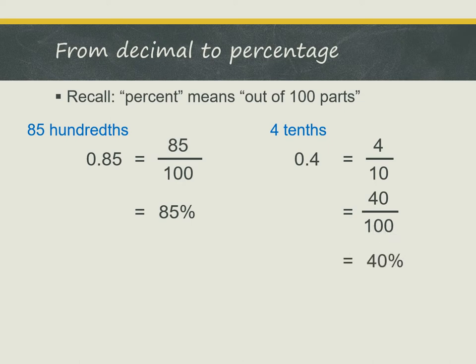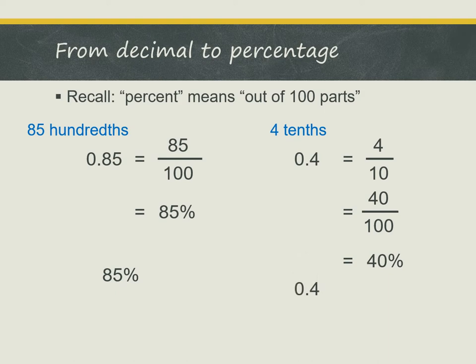Now there is a shortcut for this. Let's look at 0.85. To get from 0.85 to 85%, we can actually move the decimal point two places to the right, and we get the answer 85%. Let's look at 0.4. In the same way, we can move the decimal point two places to the right, and we get the answer 40%.